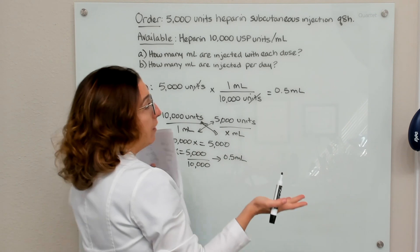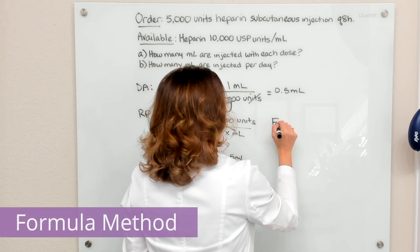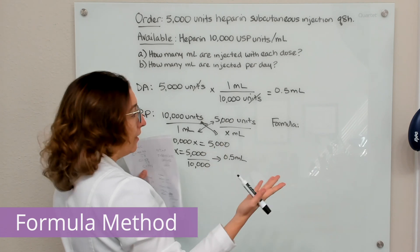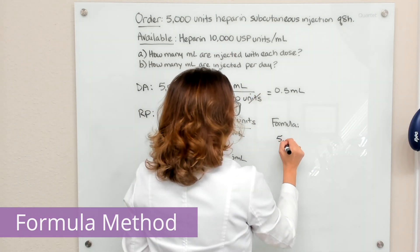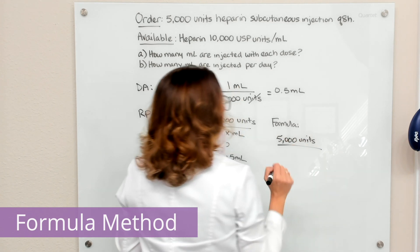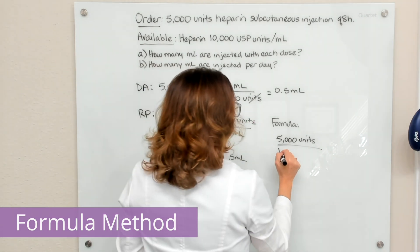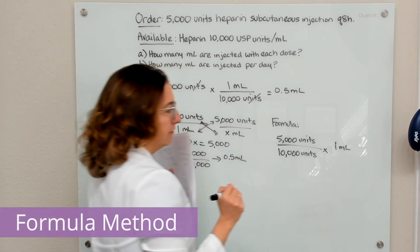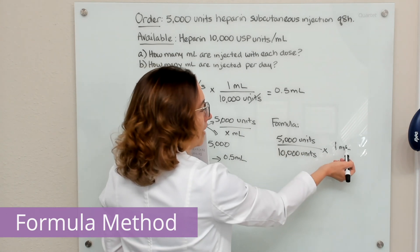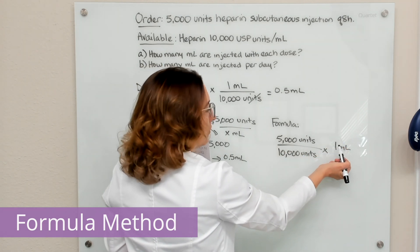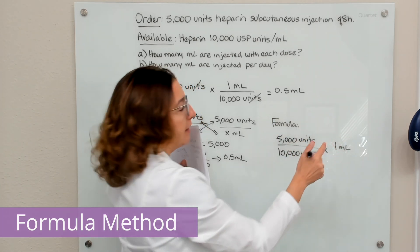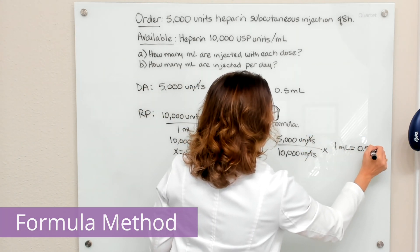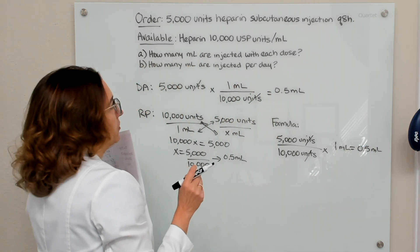We can also solve this with the formula method: desired over have, times vehicle. What we desire is 5,000 units. What we have is 10,000 units in 1 ml of solution — that's our vehicle. The vehicle is the form and amount that the medication comes in. Our units cross off, and multiplying this out gives us 0.5 ml. So 0.5 ml is administered with each dose.